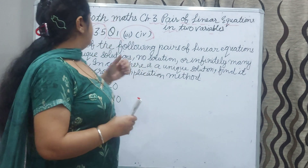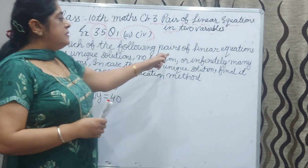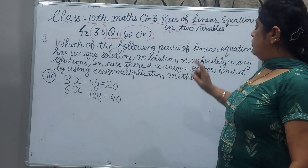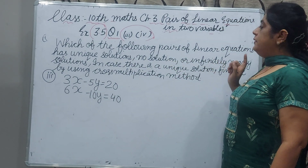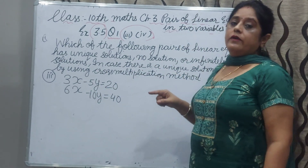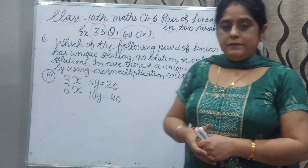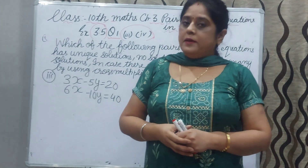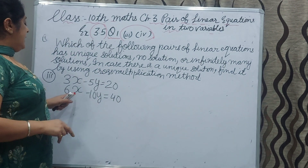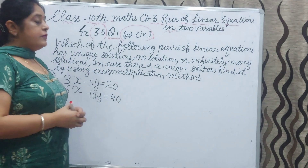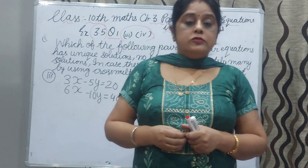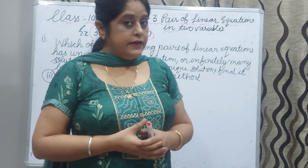Now I am reading the statement: which of the following pairs of linear equations has a unique solution, no solution, or infinitely many solutions? The equations are 3x minus 5y equal to 20, and 6x minus 10y equal to 40. We have to recognize whether it is a unique solution, no solution, or infinitely many solutions.